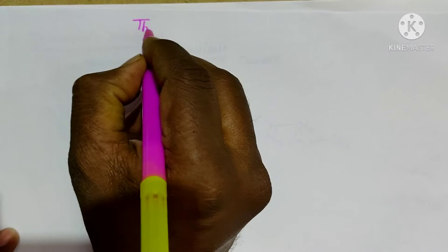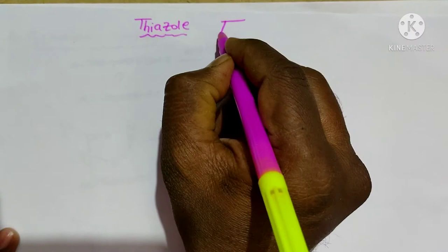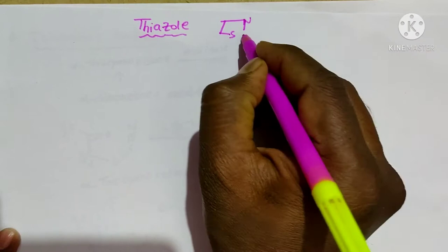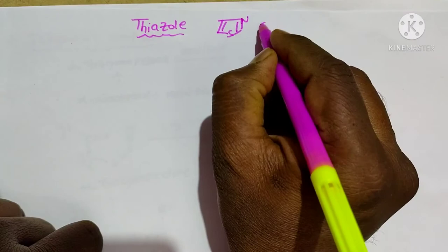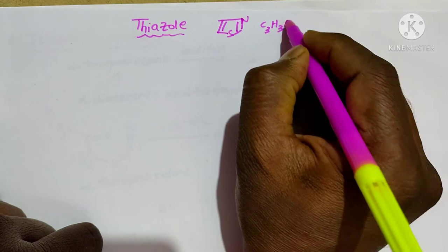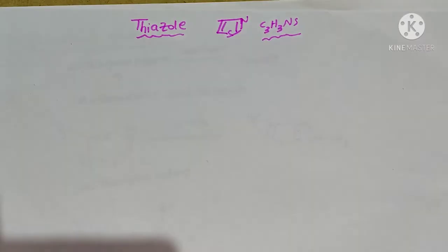In this video we are going to learn about the preparation and the properties of thiazole. The thiazole structure has the molecular formula C3H3NS.